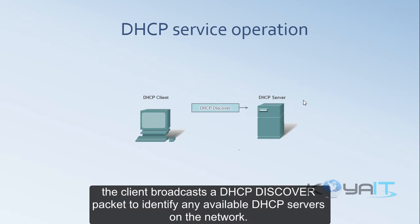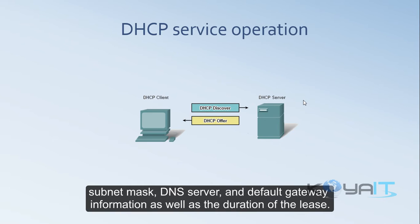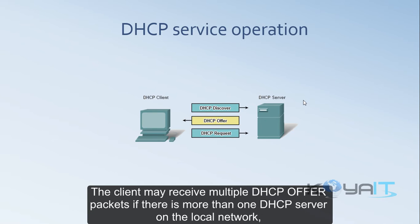The client broadcasts the DHCP Discover packet to identify any available DHCP servers on the network. A DHCP server replies with a DHCP Offer, which is a lease offer message with an assigned IP address, subnet mask, DNS server, and default gateway information, as well as the duration of the lease.